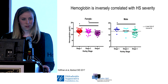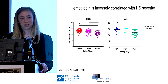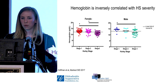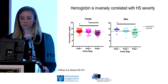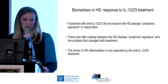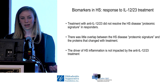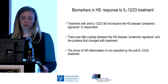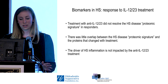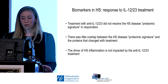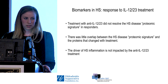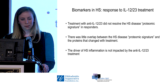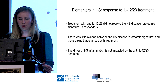Hepcidin plays a role in anemia of chronic disease, and our group presented last year at the SID that patients with more severe disease — those in early stage 3 — appear to have lower hemoglobin or more severe anemia compared to those in early-stage disease. In patients who responded to anti-IL-12/23 treatment, we found this treatment did not resolve the HS disease proteomic signature, and there was little overlap between the disease proteomic signature and the proteins changed with treatment, suggesting the driver of inflammation in HS may not be impacted by this treatment.